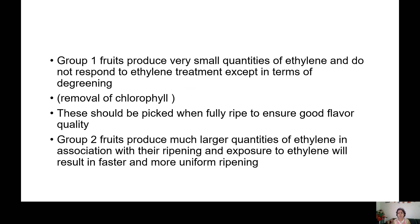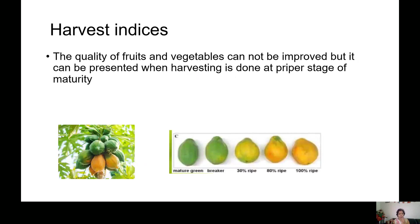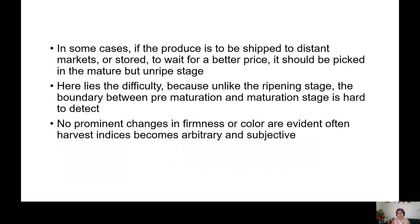Group 1 fruits produce very small quantities of ethylene and do not respond to ethylene — except in terms of de-greening, which is the removal of chlorophyll — and should be picked when fully ripe to ensure good flavor quality. Group 2 fruits produce much larger quantities of ethylene in association with their ripening, and ethylene treatment results in faster and more uniform ripening. For example, in papaya: mature green, then breaker stage, then 30% ripe, 80% ripe, and 100% ripe. The quality of fruits and vegetables cannot be improved, but it can be preserved when harvesting is done at the proper stage. If produce is to be shipped to a distant market or stored for a better price, it should be picked in the mature but unripe stage.